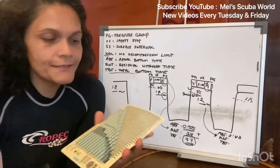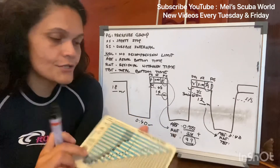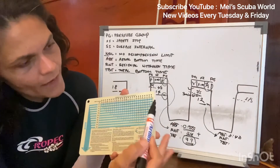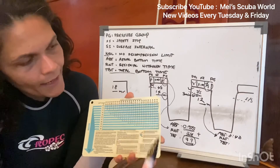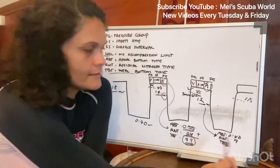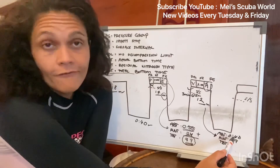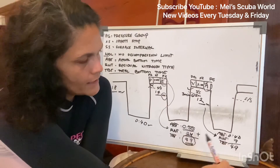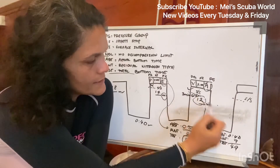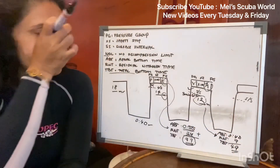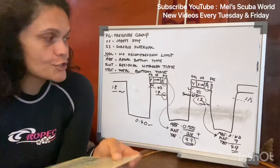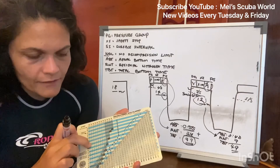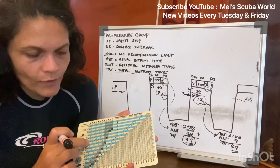So now from Pressure Group A, we carry that into the third dive at 12 meters. We look at A and match with 12 meters — the white area shows our RNT is 9 minutes, which is really nothing. We add 9 to our planned 40 minutes to get a TBT of 49 minutes. To find the new pressure group, we take 12 meters and 49 minutes on the main chart — we are way up in the chart, no safety stop required, and we are totally safe.